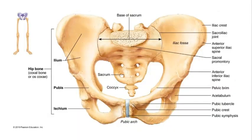The pelvic girdle is formed from the sacrum and the paired coxal bones, which are called the hip bones. Each hip bone unites with the other hip bone anteriorly by way of the pubic symphysis, and each hip bone also makes contact with the sacrum posteriorly.